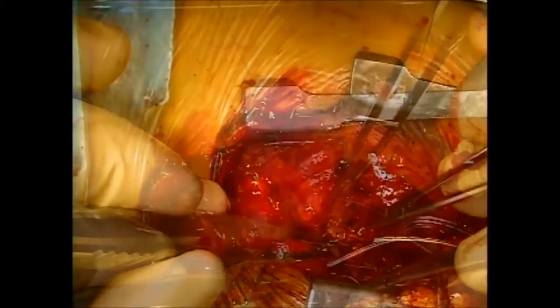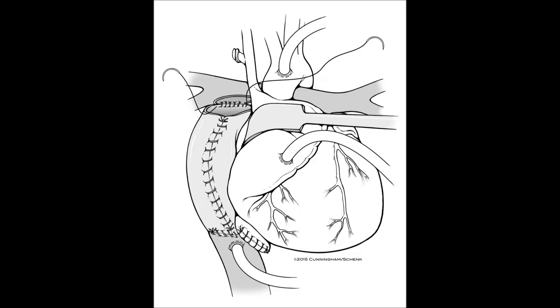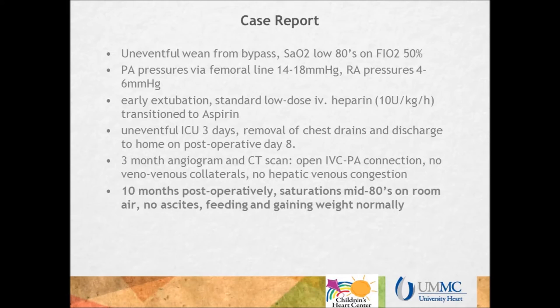An intracardiac line was placed for CVP monitoring, and the femoral central venous line placed by anesthesia served as PA pressure monitoring. Here again is an artist's illustration depicting venous cannulation strategy and the extracardiac IVC to PA connection lying partially behind the cardiac mass and the mobilized SVC after transecting the azygous vein.